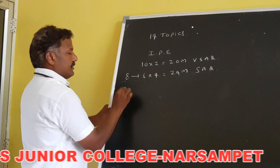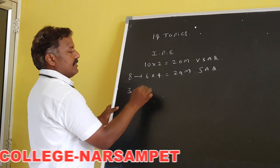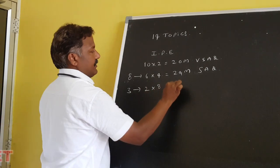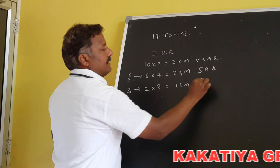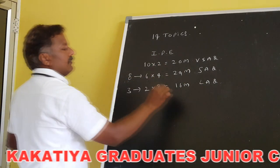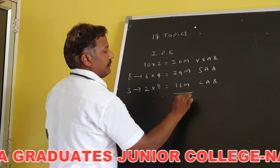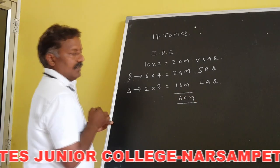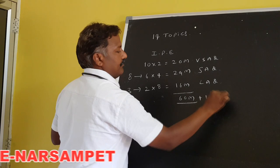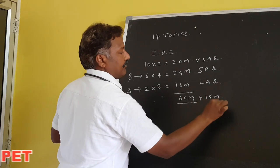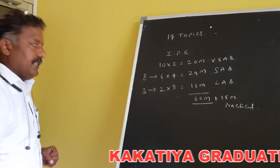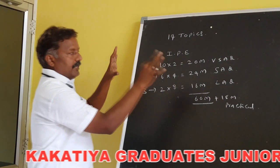For long answer questions, two out of three questions are attempted: 2 × 8 = 16 marks. The total written exam is 60 marks. Additionally, there are 15 marks for the practical examination, making this the actual paper model.